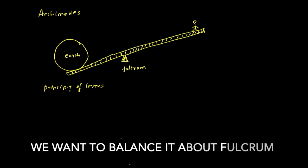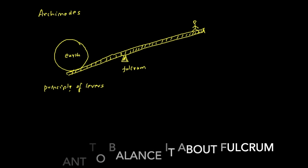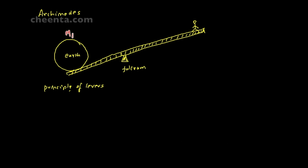Then it is possible to balance the lever about this fulcrum by two unequal weights. Suppose we have mass one, the mass of the Earth, and mass two, the mass of Archimedes. Let's say this point is A, this point is B, and this point is F. The principle of levers basically says that M1 times AF equals M2 times BF if the lever is balanced.